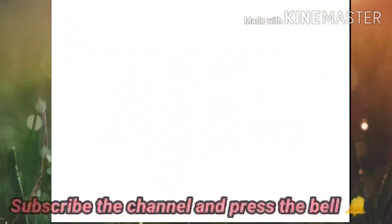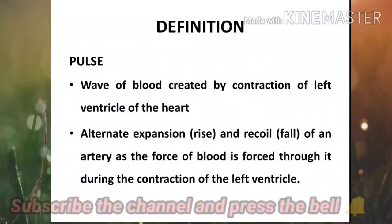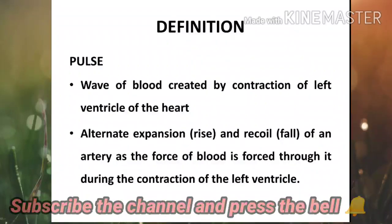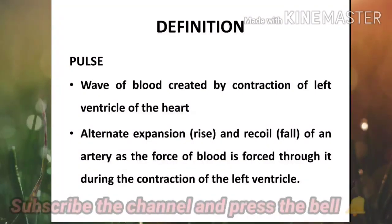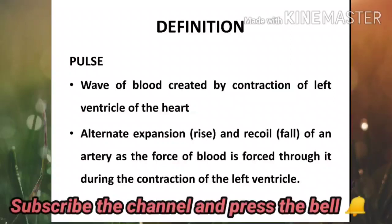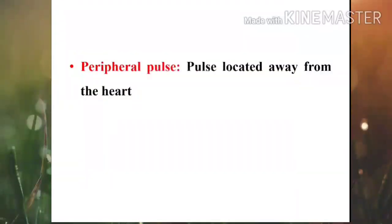So first let us discuss the definition of pulse. It is the wave of blood created by the contraction of the left ventricle of the heart. It is the alternate expansion and recoil of an artery as the force of blood is forced through it during the contraction of the left ventricle. There are two types of pulse: first is the peripheral pulse, and second is the apical pulse.